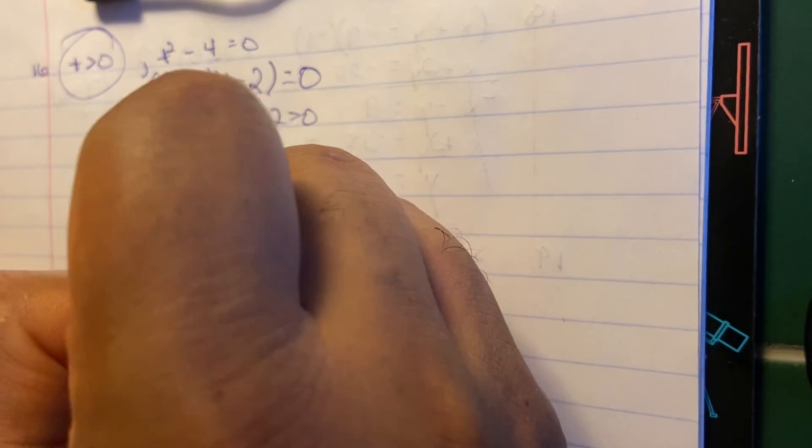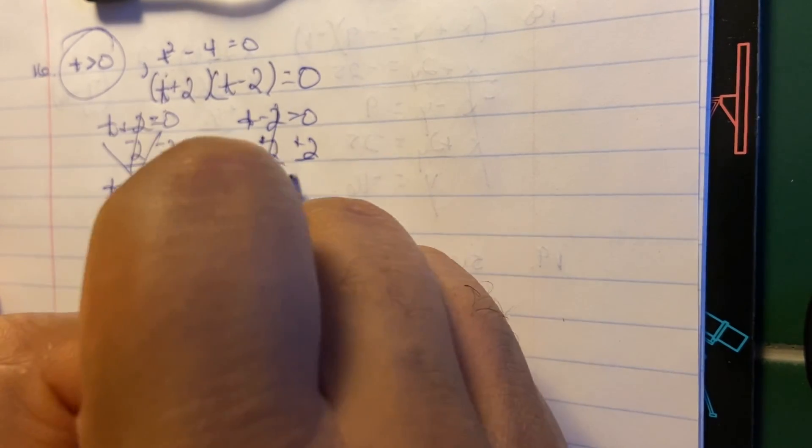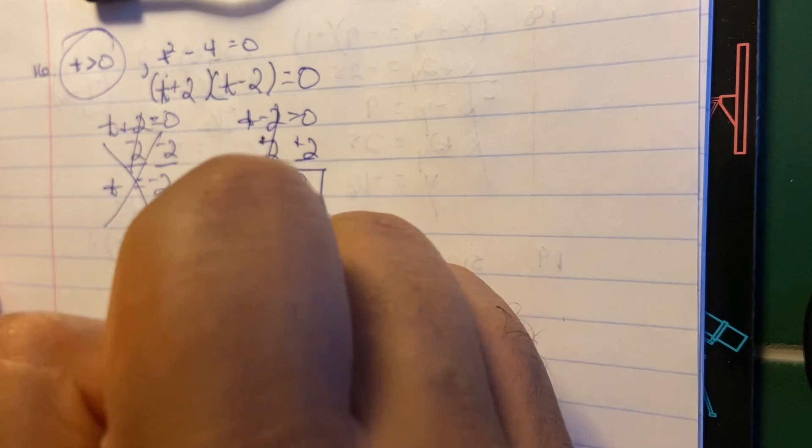So then we go over here. We do plus two on the left side and plus two on the right side. And we got t = 2. So that's the only answer that we care about.